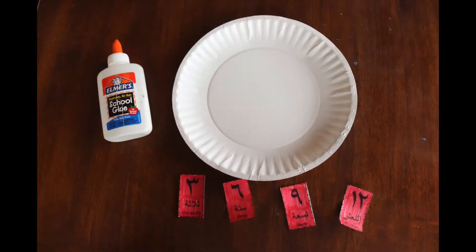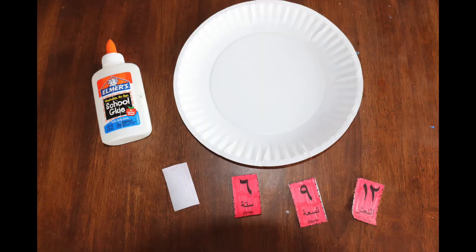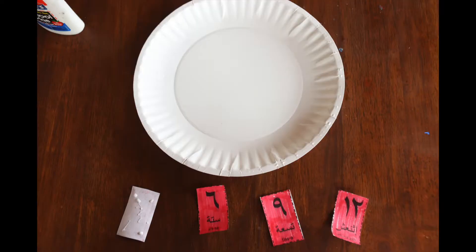I pulled out Thalatha, Sitte, Tissa, and Ethnash. So from left to right, 3, 7, 6, 9, and 12. Yes, the 6 looks like a 7. And so I like to put those in the quarters. So go ahead and glue those into place.